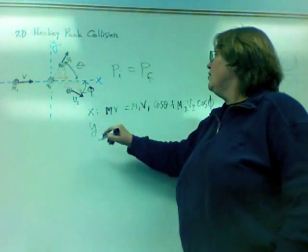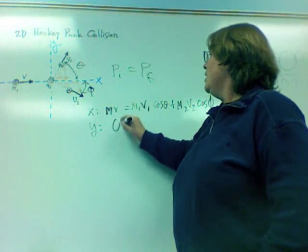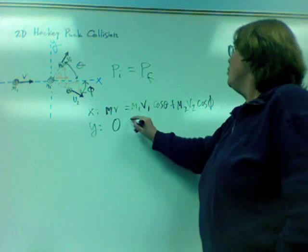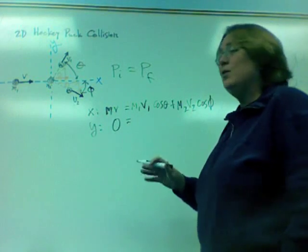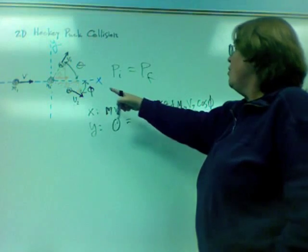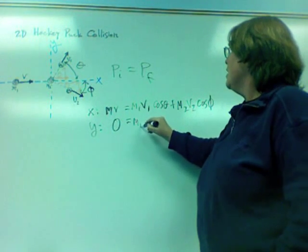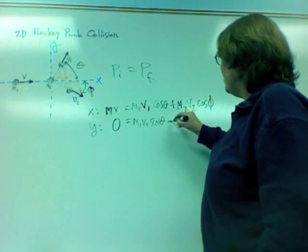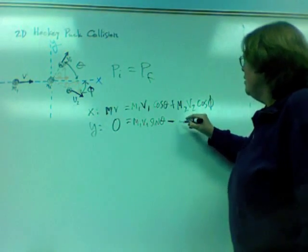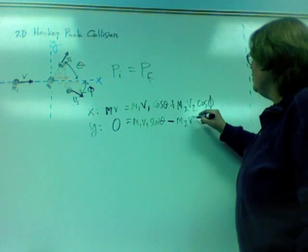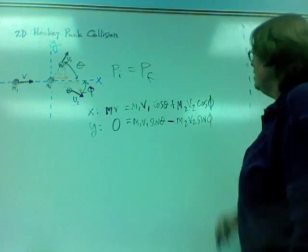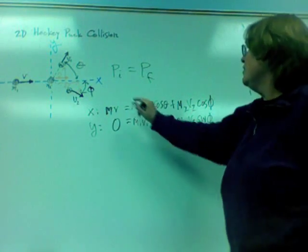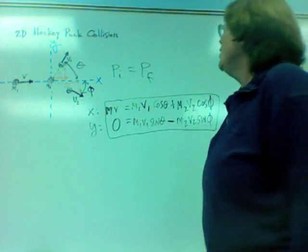Now, in the y direction, initially, we have zero momentum, which means after the collision, we should also have a total of zero momentum. Now, upwards, we've got M1, V1, sine theta. And downwards, and therefore negative, we have M2, V2, sine phi. So it looks to me like we've got two equations here and we've got two unknowns.